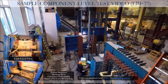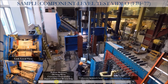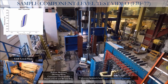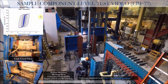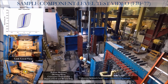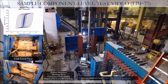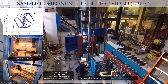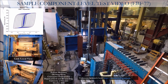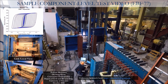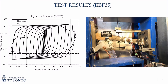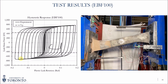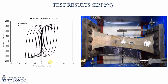A time-lapse video of the component test on EBF 77 shows the hysteretic response on the left, a close-up view of the link, and the global view — demonstrating the stable response of the link going well beyond the 0.08 radian code requirement, reaching 0.2 radians, which was very good performance, and eventually fracturing. Looking at similar tests — EBF 35 and EBF 100 showed similar performance to EBF 77. The EBF 290 was the only size that achieved less rotation, and we believe the reason is that for larger links, we need to increase the link length to get better ductility.